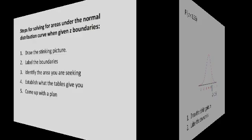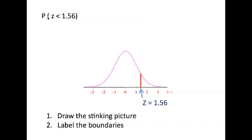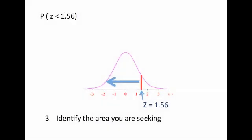For our first problem, we're going to find the area — or the probability — that z is less than 1.56. A probability implies there is a percentage of this area that we will be looking at. If we select a data point, what is the probability that its z-score will be less than 1.56 standard deviations above the mean? Drawing the stinking picture: I've drawn a bell curve for the standard normal distribution and labeled my boundary at z equals 1.56. The area I'm asked to find is where z is less than 1.56.